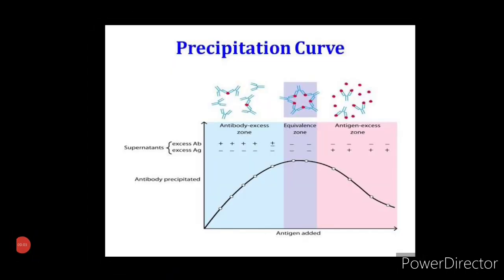Now let us understand precipitin curve. Precipitation reactions in fluids yield a precipitin curve. A quantitative precipitation reaction can be performed by placing a constant amount of antibody in a series of tubes and adding increasing amounts of antigen to the tubes. After the precipitate forms, each tube is centrifuged to pellet and the precipitate is measured.